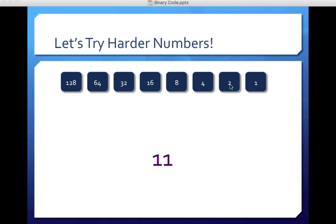So we do want a two. That gets us to 10, so eight and two is 10. We need one more plus one equals 11. So this is what our binary code for 11 looks like.